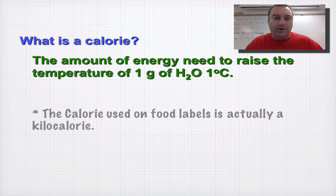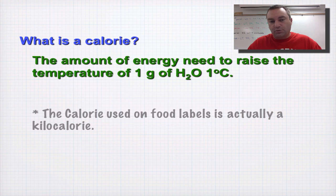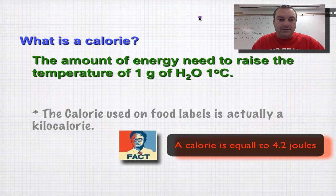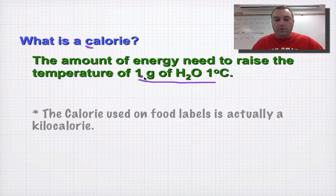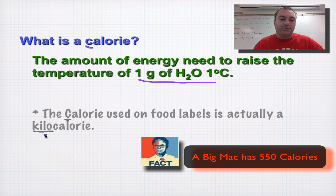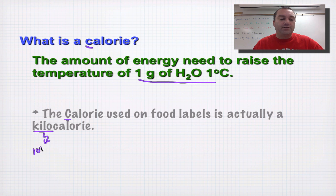Since we're talking about the energy found in food, the first thing I wanted to cover is: what is a calorie? A calorie is defined as the amount of energy it takes to raise the temperature of one gram of water one degree Celsius. This kind of calorie is referred to as a little-c calorie. The type of calorie you're used to seeing — often referred to as a food calorie — is a big-C calorie.